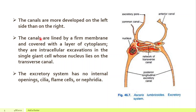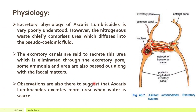The canals are lined by a firm membrane and covered with a layer of cytoplasm. They are intracellular excavations in a single giant cell whose nucleus lies on the transverse canal on the left side. The excretory system has no internal openings, cilia, flame cells, or nephridium — none of these structures are present here in Ascaris.